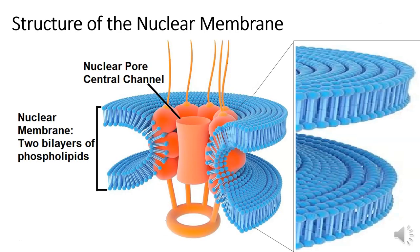This slide shows a more detailed structure of the nuclear membrane. Notice that it consists of two phospholipid bilayers, giving added protection. In addition, the nuclear pores that allow materials to pass in and out of the nucleus are quite complex in structure.